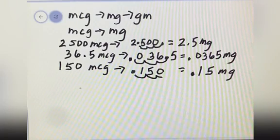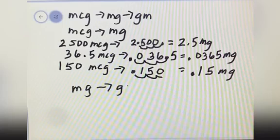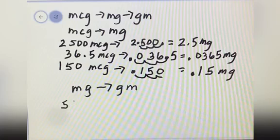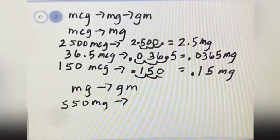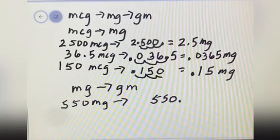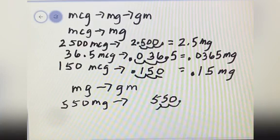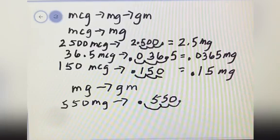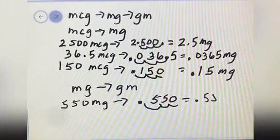How about milligram to gram? Convert milligram to gram. Example: you have 550 milligram. You want to convert to gram. You will write 550 here. Where is the decimal point? Again, you will move the decimal point 3 times to your left — 1, 2, 3 — then you will put your decimal point here. Remove your decimal point here at the end. The answer is 0.55 gram.